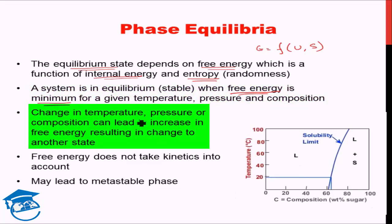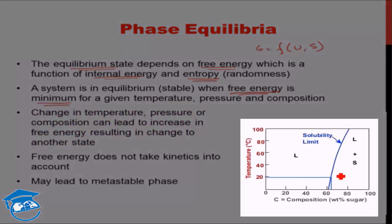A certain composition at a certain pressure can change its equilibrium state from one state to another by changing temperature. A change in temperature, pressure, or composition can lead to an increase in free energy of the existing equilibrium state such that a new equilibrium state — one with lower free energy — needs to be attained. To drive this point home I will use the example of water and sugar.